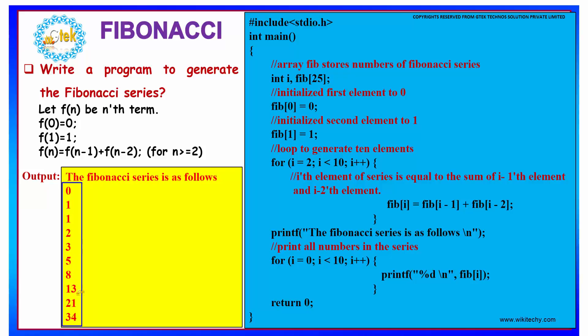8 plus 5 gives you 13, 13 plus 8 gives you 21, 21 plus 13 gives you 34. This is known as your Fibonacci series.